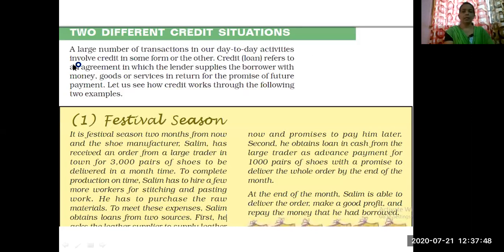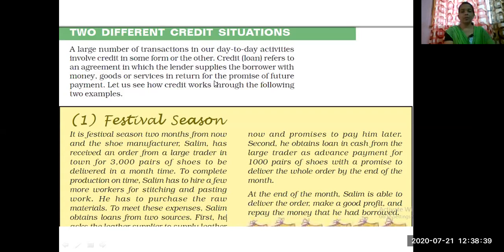Now we will move ahead with the next part: two different credit situations. Credit means a person gets money on the assurance of repaying it. A large number of transactions in our day-to-day activities involves credit in some form or other. Credit, or a loan, refers to an agreement in which the lender supplies the borrower with money, goods, or services in return for the promise of future payment.